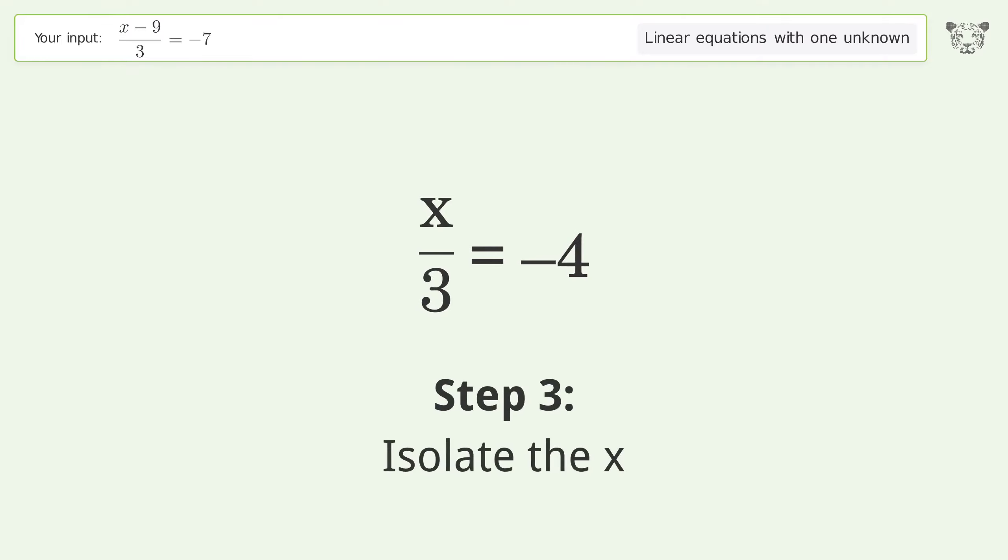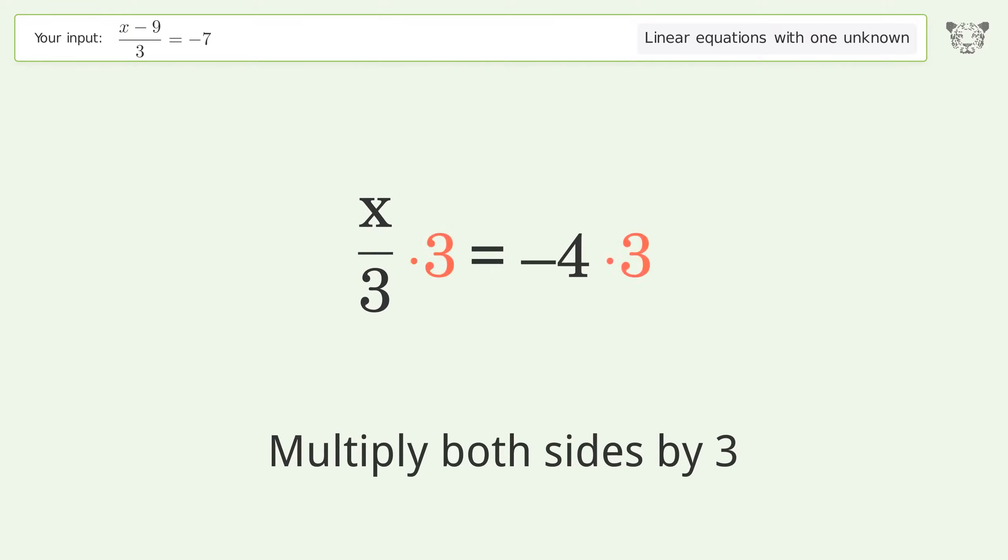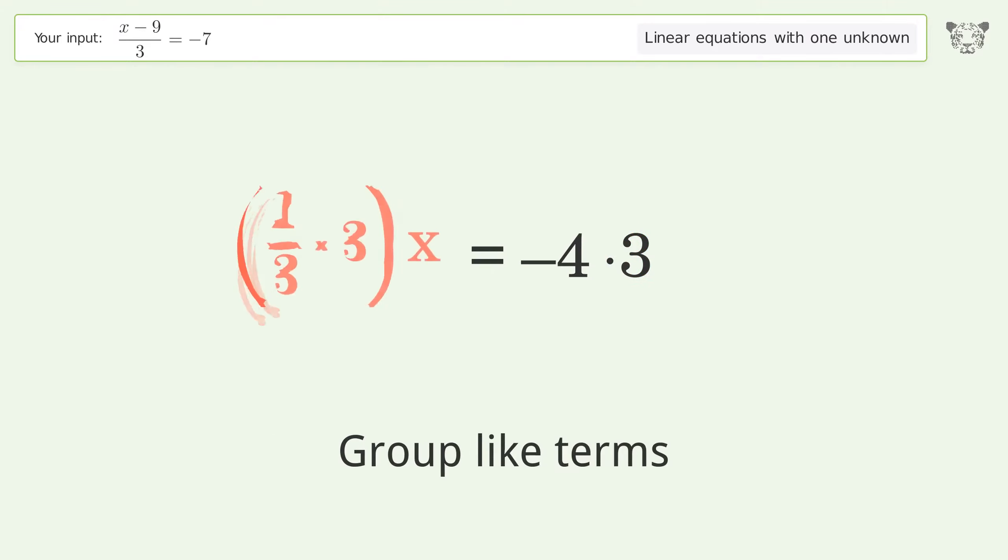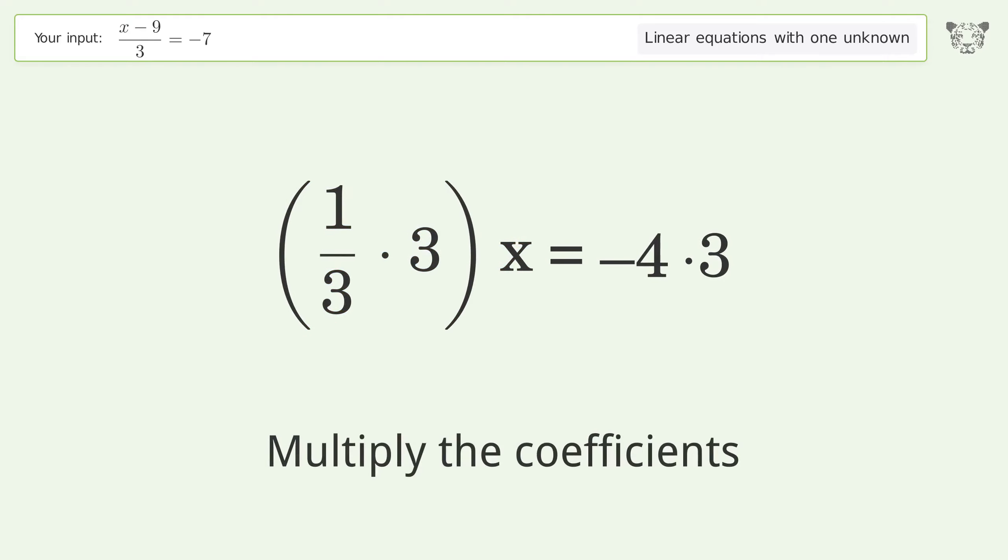Isolate the x. Multiply both sides by 3. Group like terms. Multiply the coefficients.